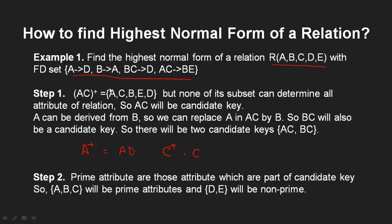Similarly, since A can be determined by B, BC will also be a candidate key, as its subsets cannot determine all other attributes. So the candidate keys are AC and BC. Prime attributes are A, B, and C, and non-prime attributes are D and E.